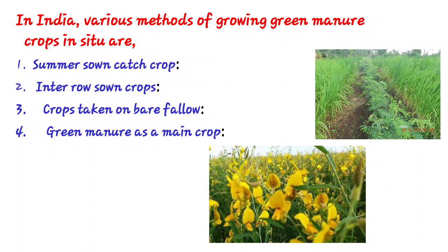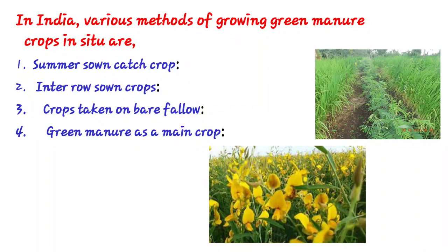These crops are buried in the field after three to four months, that is in July or August, before the planting of the main kharif crop. The crop should be grown in the last week of April, May, or June and buried after one to three months, before the kharif season.